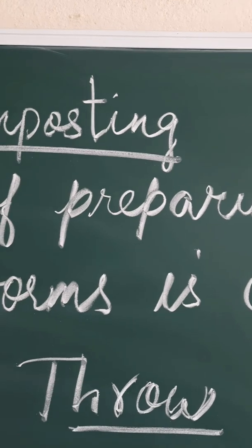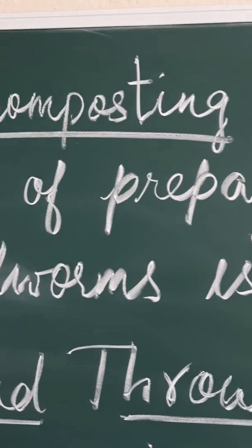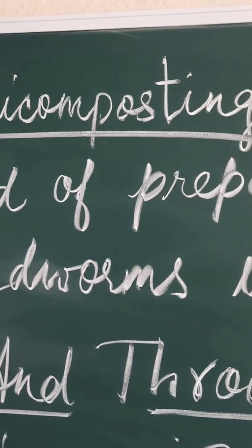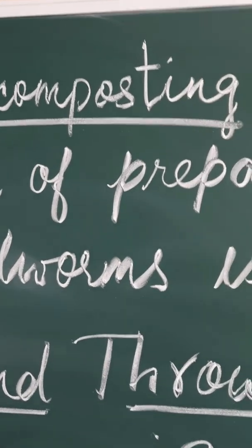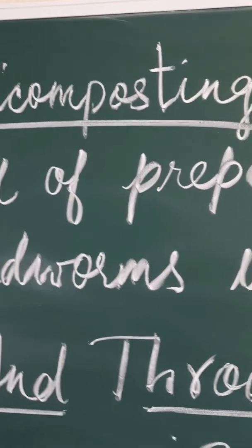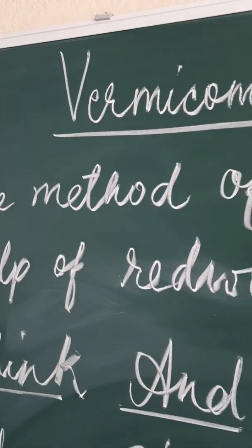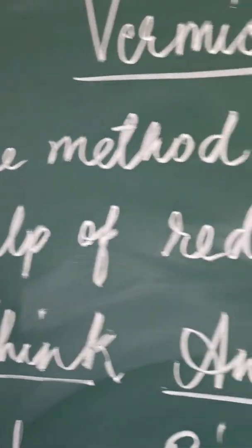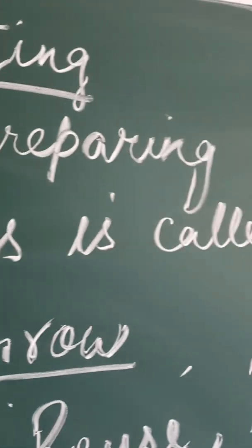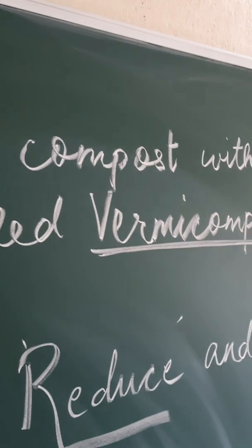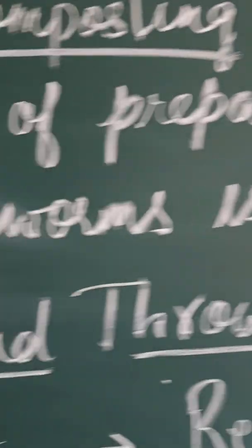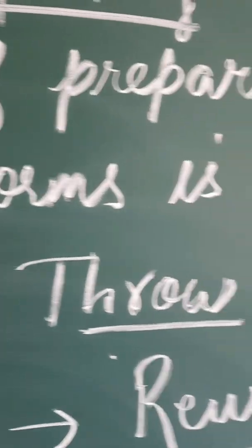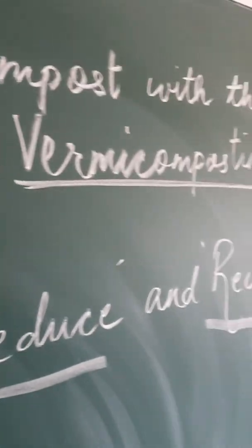Composting means the compost which is formed by dead decaying matter. And if you want to form that compost with the help of red worms, then it is known as vermicomposting. So the method of preparing compost with the help of red worms is called vermicomposting.